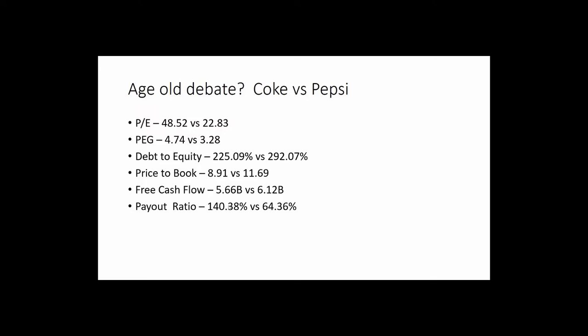Payout ratio is a bit of a big deal here. The payout ratio for Coke is 140% versus almost 65% for Pepsi. Long term, the payout ratio is a product of your net income. If you're paying out 140% of your net income long term, that's going to be tough. Coke is sitting on a mountain of cash so they can get away with it for a while, but we need to keep an eye on that. At 65%, Pepsi's payout is probably sustainable.